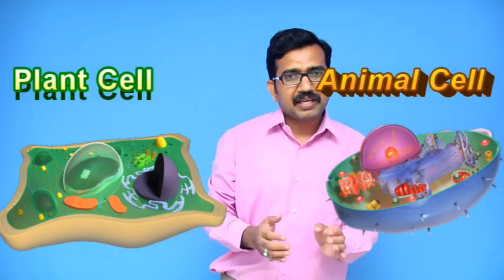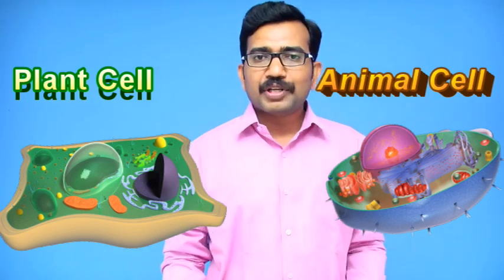Do you think both the parts are similar? No, there are some differences. The plant cell has a cell wall, but the animal cell doesn't. The plant cell has chloroplast, but the animal cell doesn't have chloroplast. The plant cell has centrosomes, but the animal cell doesn't have centrosomes. The vacuoles present in the plant cell are large and big in size, and in the animal cell the vacuoles are smaller. This is the main difference between these two. Now you can come to know the meaning of cell, the parts of animal cell and plant cell, and the main differences between them.